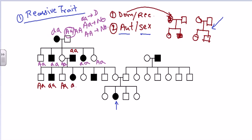This offspring is infected — small a from father, small a from mother. This one is unaffected — capital A from mother, small a from father. This one is again infected — small a from father, small a from mother. This one is unaffected — capital A from mother, small a from father. The last one is capital A from father, small a from mother — unaffected.